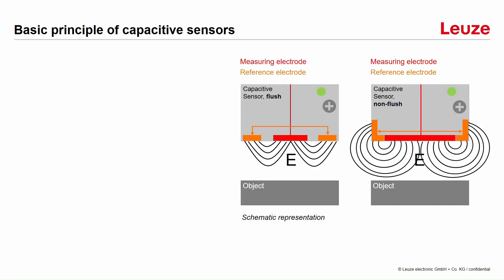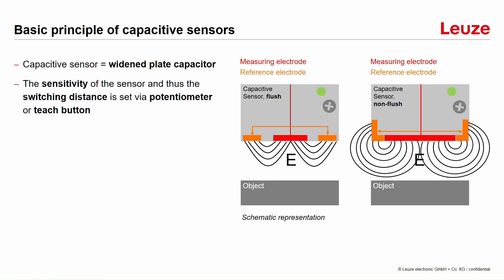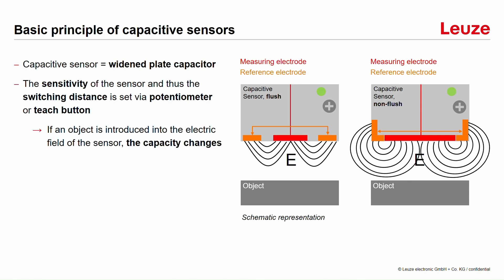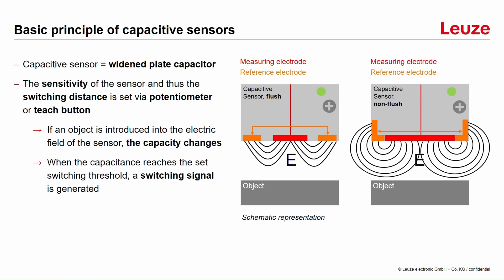What does this mean for a capacitive sensor? In the two pictures here, you can see on the left side a flush sensor, where the electric field and the active zone are only on the front. On the right picture, you see a non-flush sensor, where the electric field is not only on the front but also on the sides. A capacitive sensor can be understood as a widened plate capacitor. We can also adjust the sensitivity of the sensor, for example with a potentiometer. If we bring an object into the electric field of the sensor, the capacity will change. And if the capacity reaches the level we have already adjusted, there will be a switching signal — that is the basic principle of a capacitive sensor.